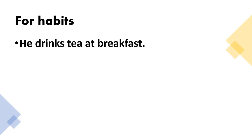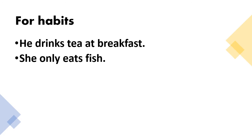Here are some examples of simple present tense for habits. He drinks tea at breakfast. Drinks is simple present tense. She only eats fish. Eats is the verb. They watch television regularly. Watch is the verb.